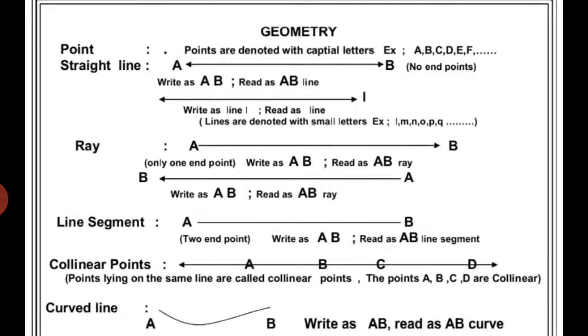A straight line have no end points. So, A B is a straight line. This can be read as A B line.